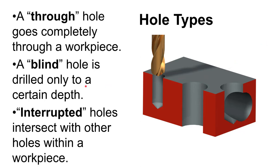An interrupted hole intersects with another hole, and this can cause difficulty. When two holes intersect, you have an imbalance in the cutting forces on the end of the drill. Because you're holding the drill far away from the cut, this imbalance causes significant deflection in the drill bit, which can make the drill warp out of the way.